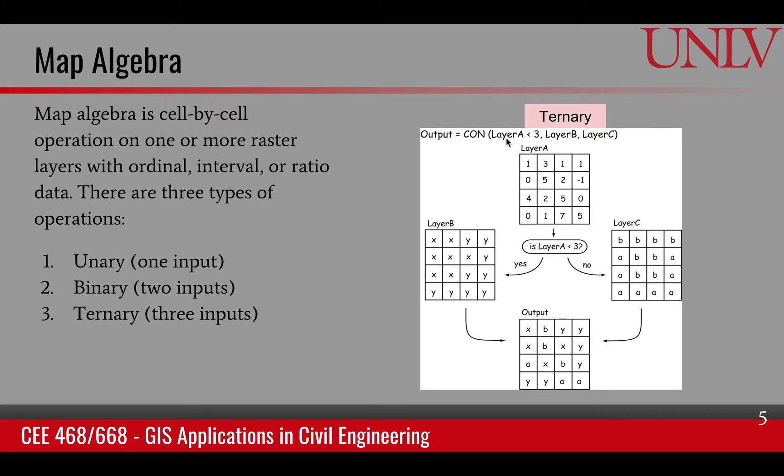You can see that this is a condition, and if this condition is true, the corresponding pixel value will come from B. If this condition is false, then the corresponding value will come from C. This is how we apply a conditional operator, which is an example of the ternary operator that needs three inputs to create one output.